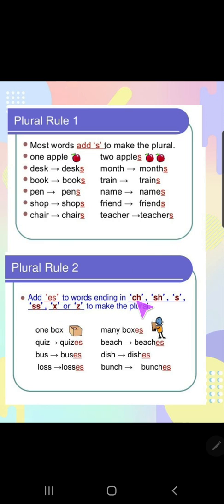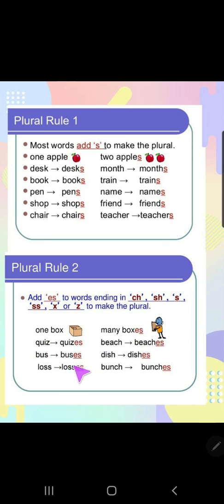Rule two: add 'es' to words ending in sh, s, x, or z. For example: one box → many boxes (x ending). Quiz → quizzes, bus → buses, loss → losses, bench → benches, beach → beaches, dish → dishes, bunch → bunches.